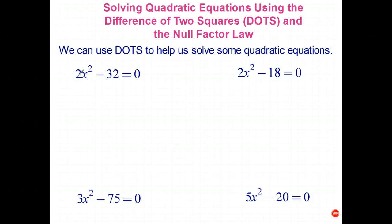So for this particular question here, I've got 2x squared take 32 equals 0. There's a common factor of 2. That leaves in brackets x squared takes 16 equals 0. So I didn't have a nice difference of squares originally, but now that I've taken out the common factor of 2, I do.